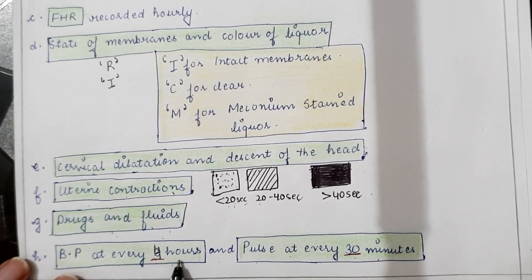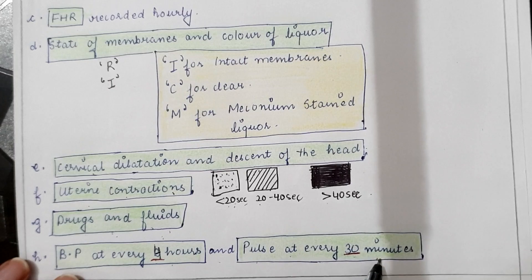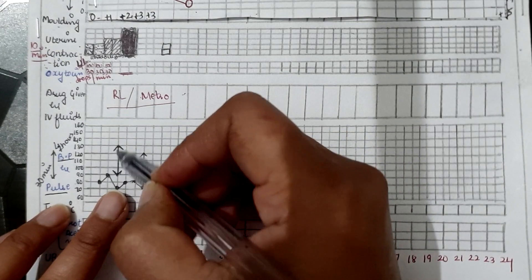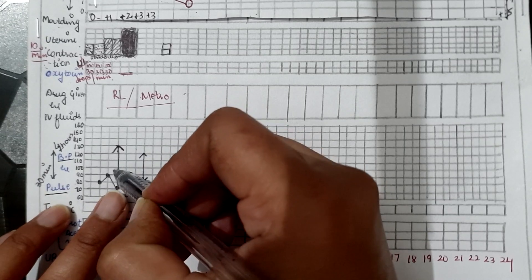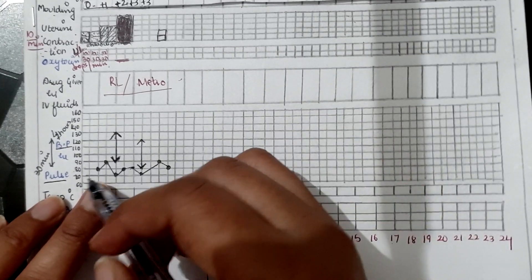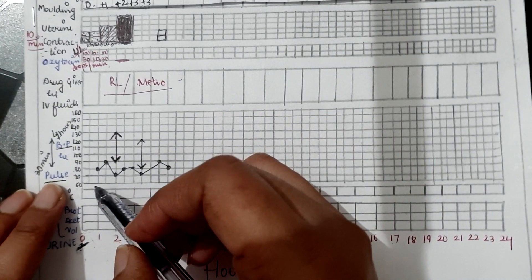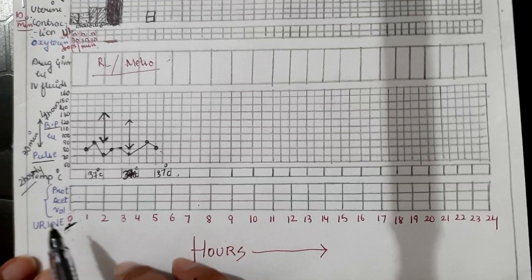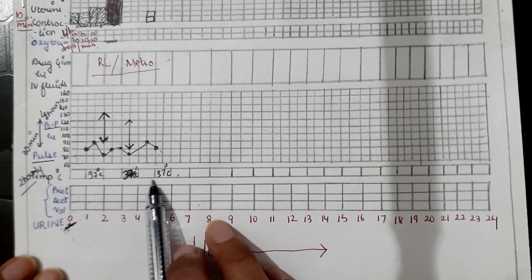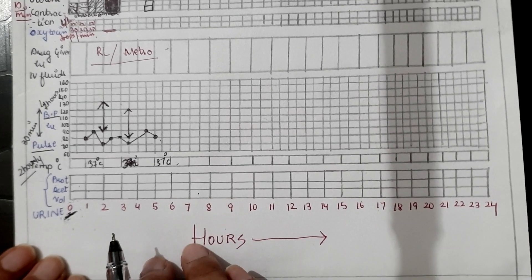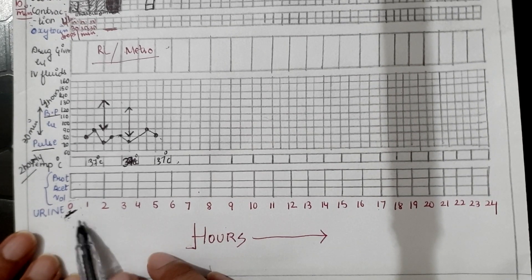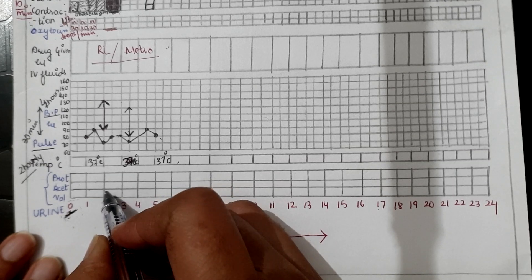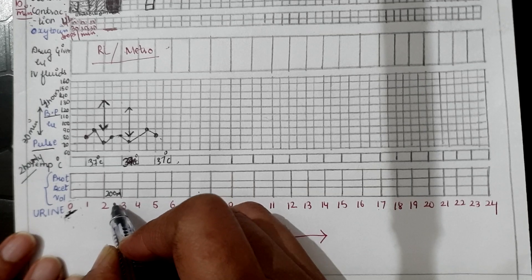Blood pressure is recorded every four hours and pulse every 30 minutes. Blood pressure is marked as a line with arrows at both ends — for example, 130/90. Pulse is marked as a dot and dots are joined with a line. Temperature is measured every two hours and recorded in Celsius. Urine analysis checks for protein and acetone; urine output quantity is also recorded whenever the patient passes urine.